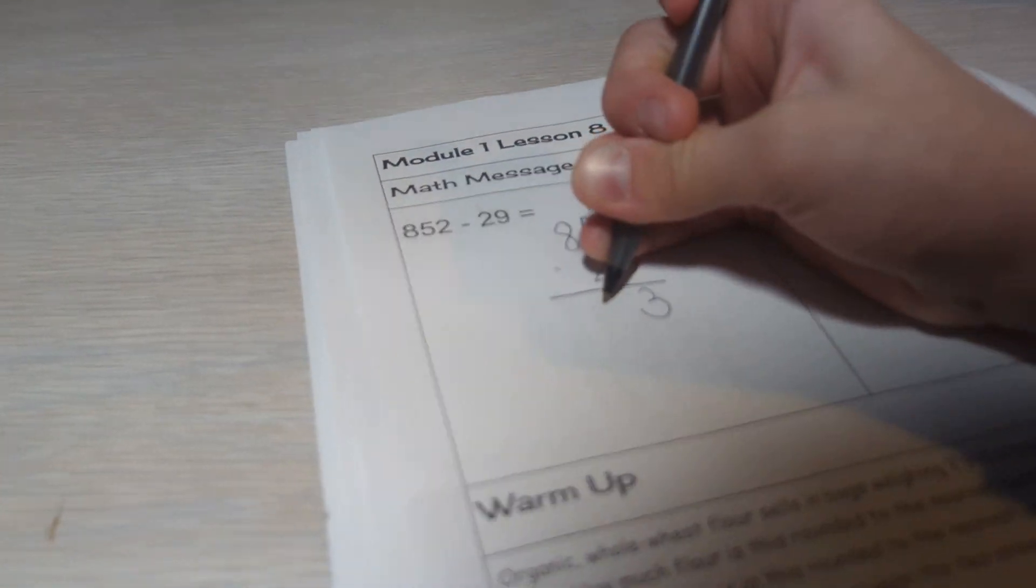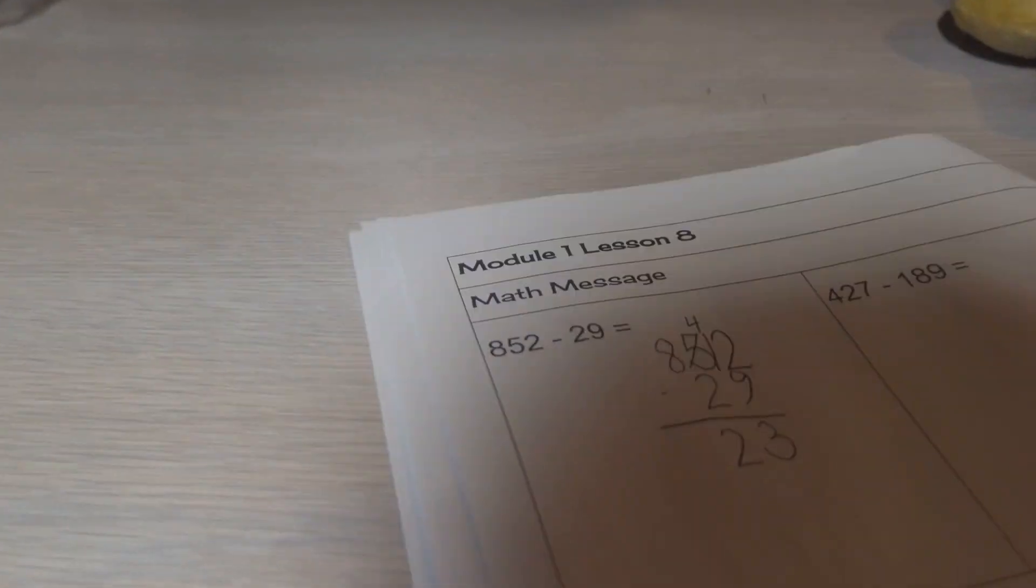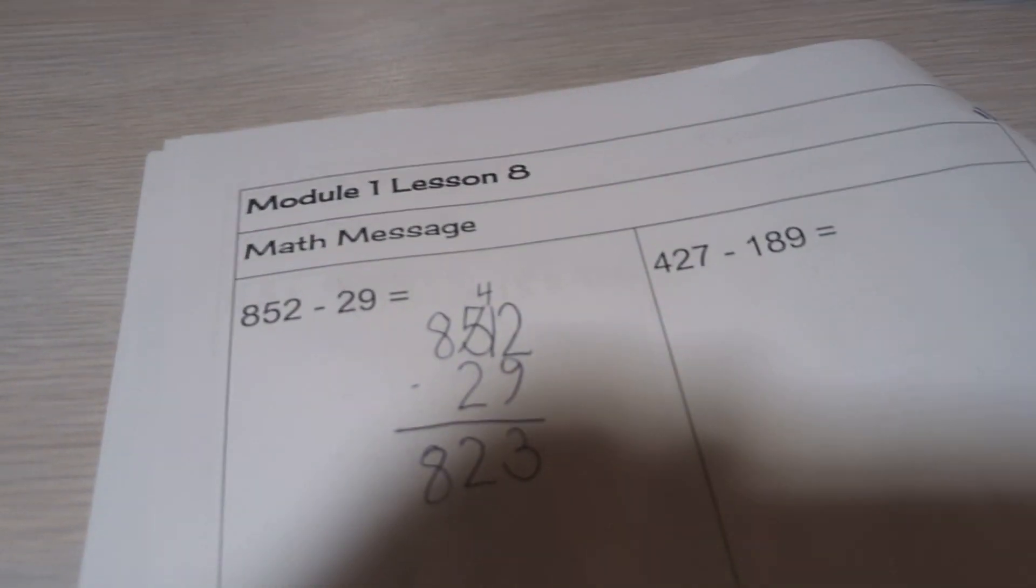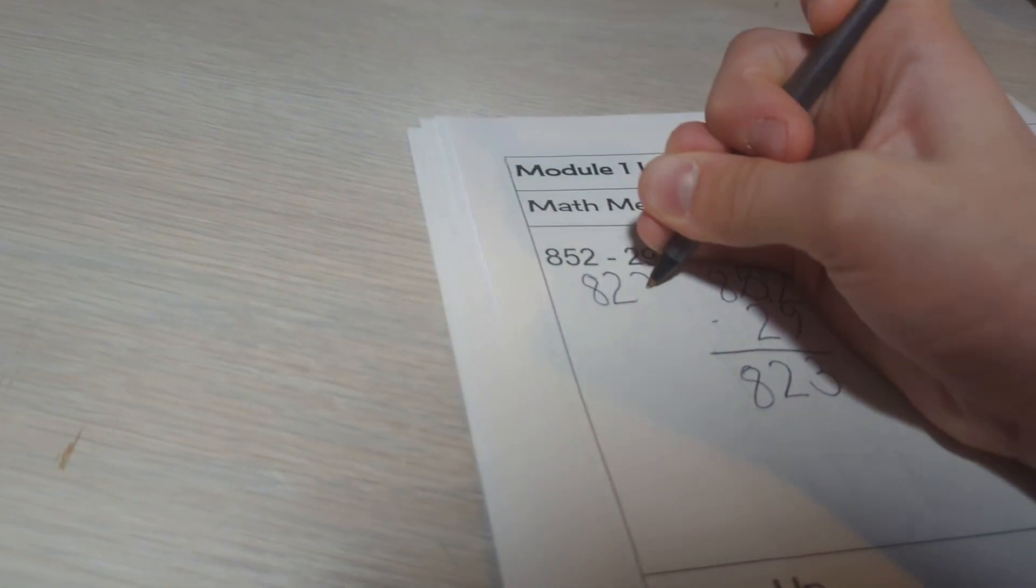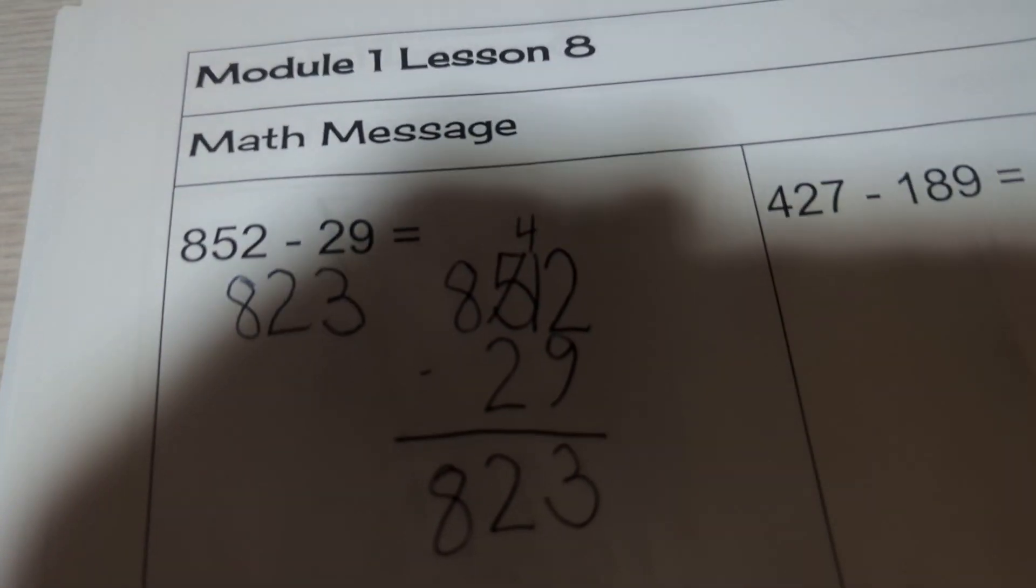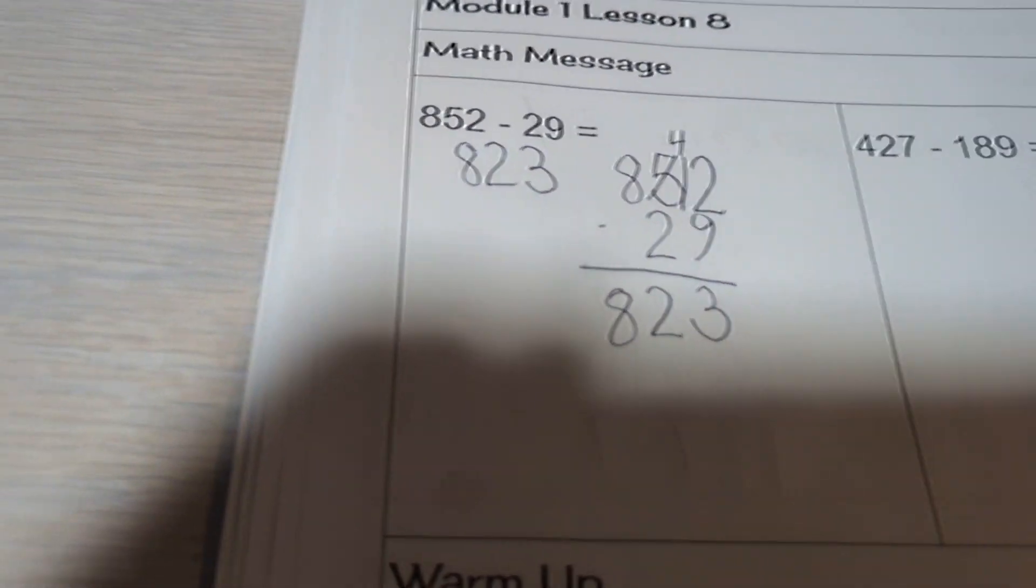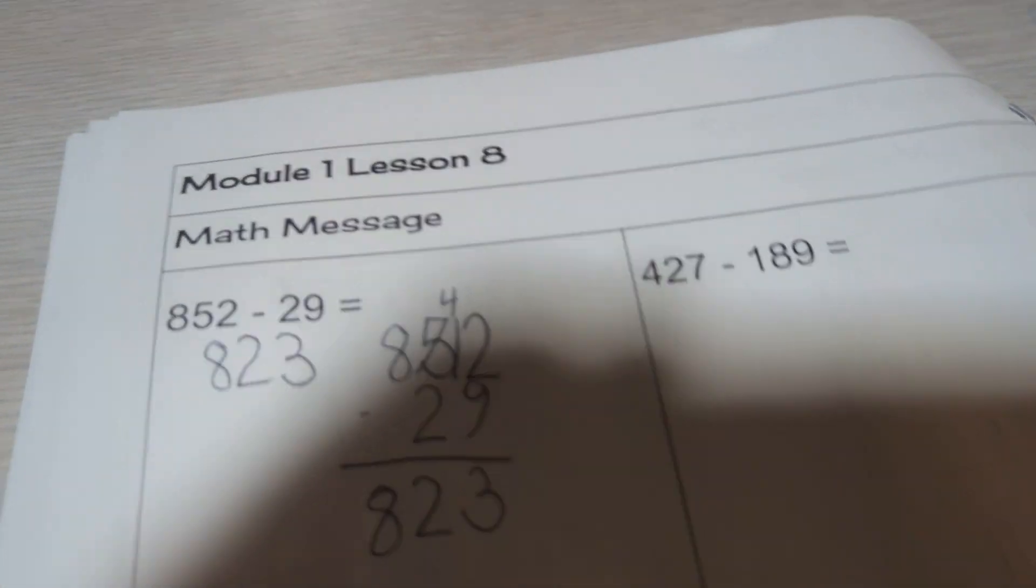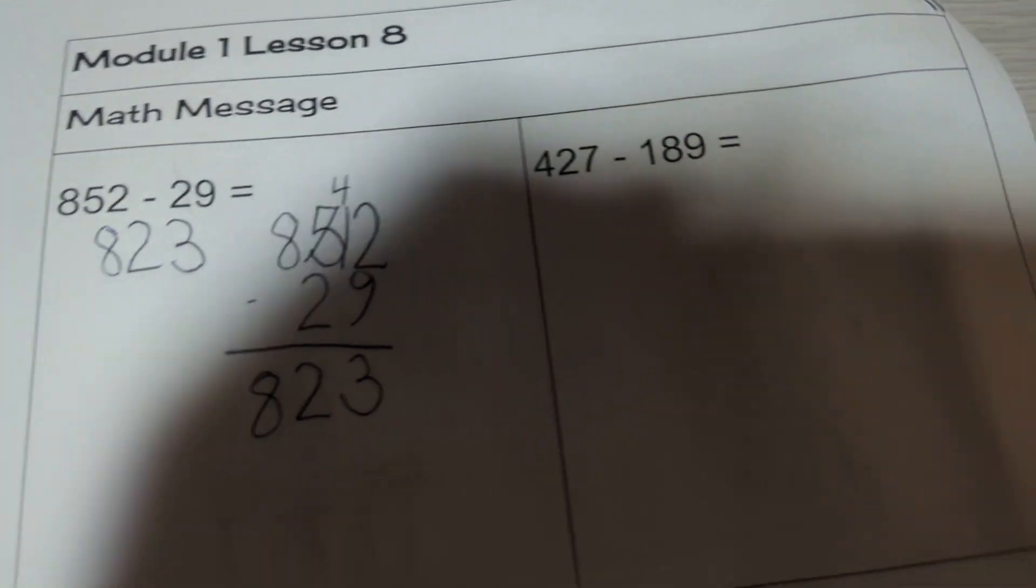Great! Okay, so I'm doing all these problems. The first one, 852 minus 29 is 823 because look here, 12 minus 9 is 3, 4 minus 2 is 2, and 8 minus 0 is 8.